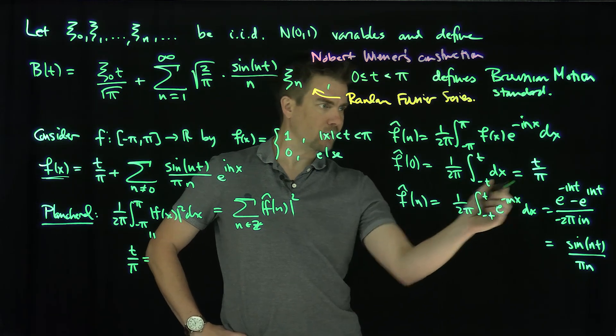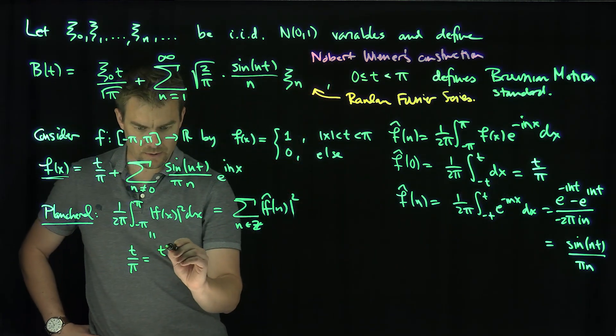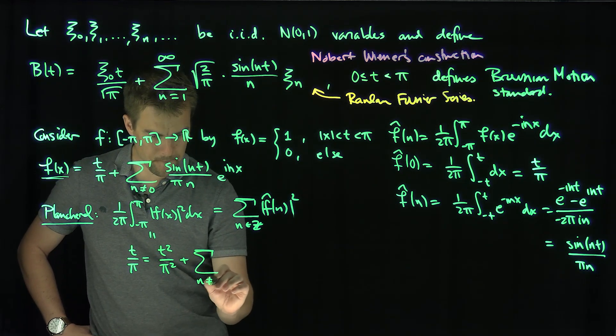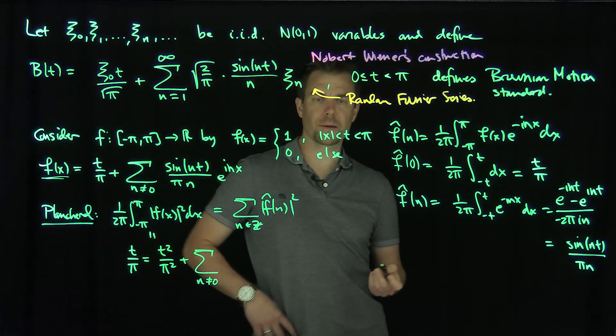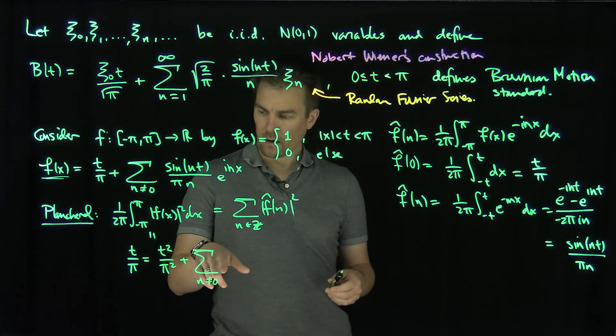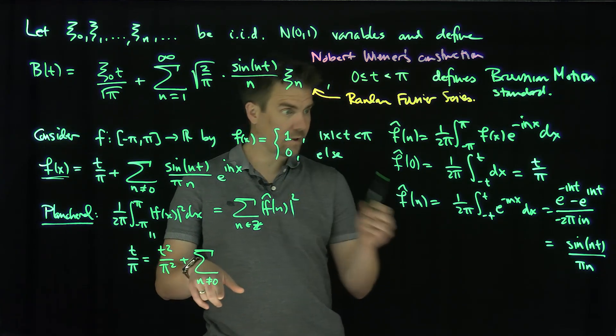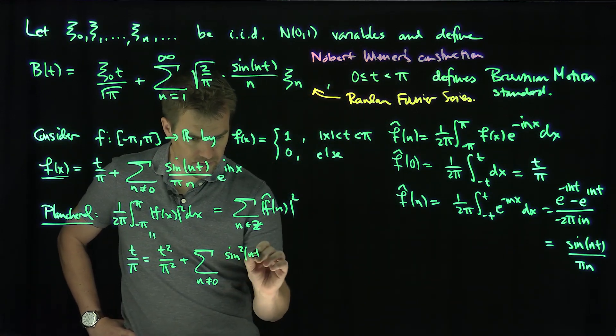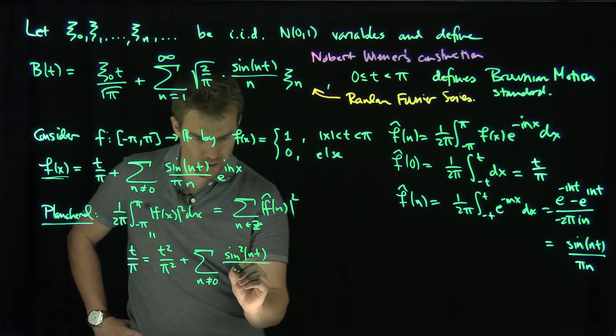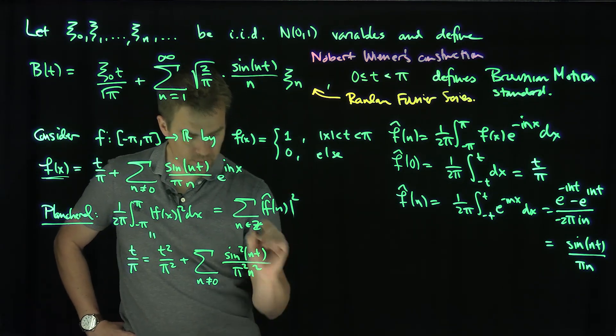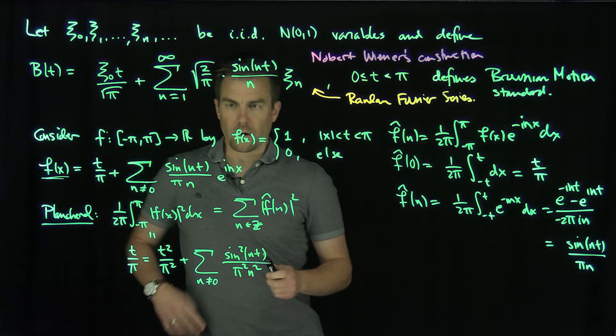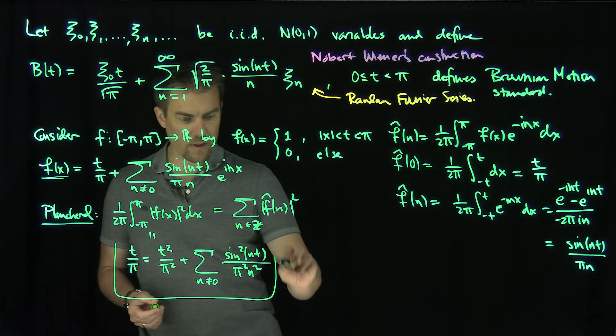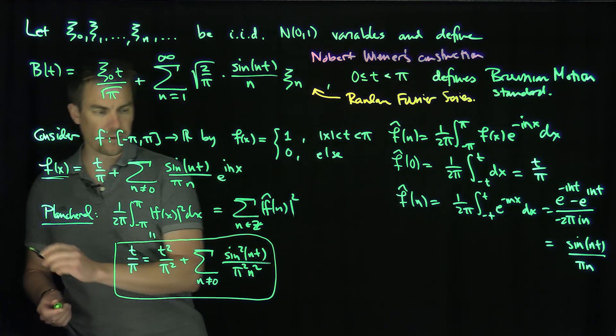t over π is equal to the zero mode squared, so t² over π², plus the sum n not equal to zero of these things squared over here, so sin²(nt) over π²n². So that's a beautiful thing from Fourier analysis.